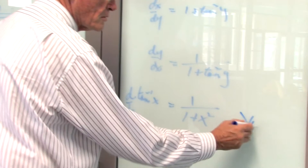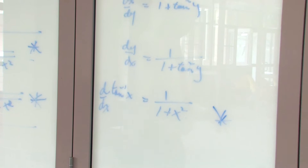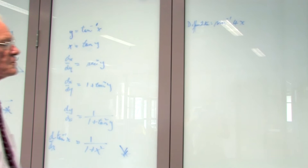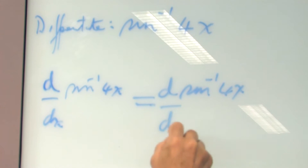Learn those, know them, and learn how it's done. Now take this example: how would you differentiate arcsin(4x)? Set it out this way — the derivative of arcsin(4x) with respect to x, using the chain rule, equals the derivative of arcsin(4x) with respect to 4x, multiplied by the derivative of 4x with respect to x.